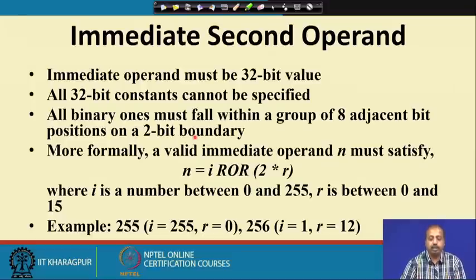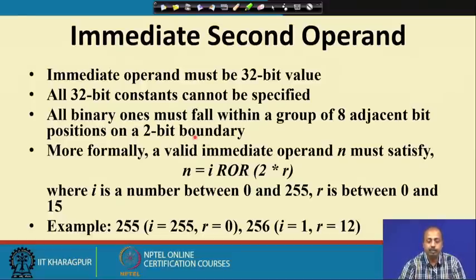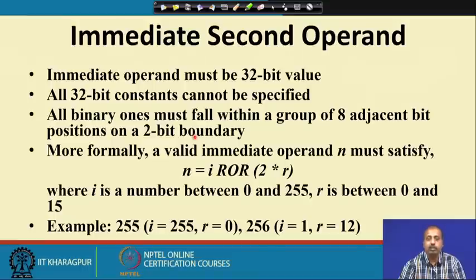But if the second operand is an immediate operand, then the immediate operand must be a 32-bit value. We must have a 32-bit value, and naturally there is a catch here because the instruction itself is 32 bits, and I am saying that the immediate operand should also be 32 bits.